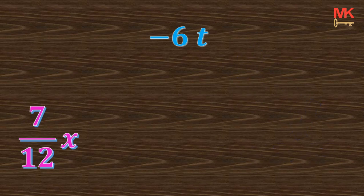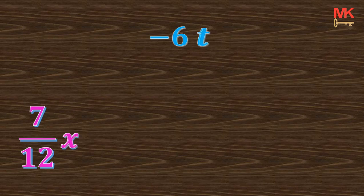Now what about 7 over 12x and negative 16t? These 2 terms are not constant because they have the letters x and t respectively.